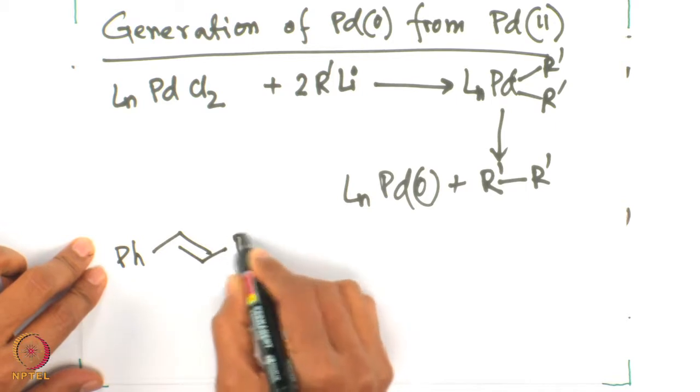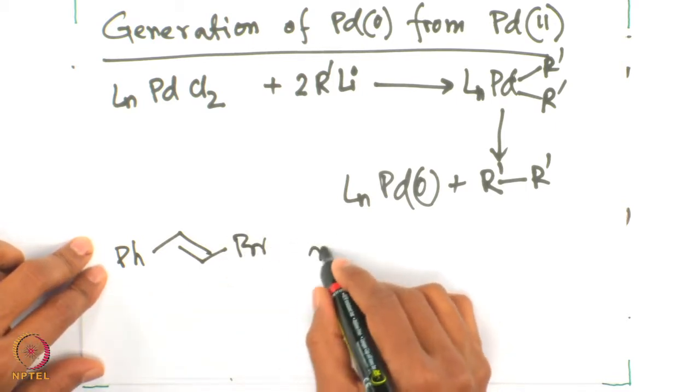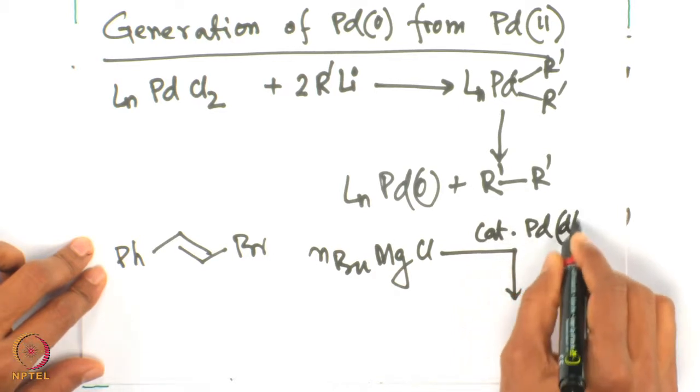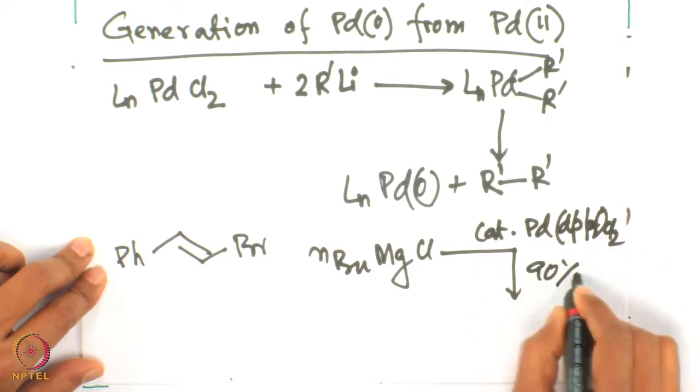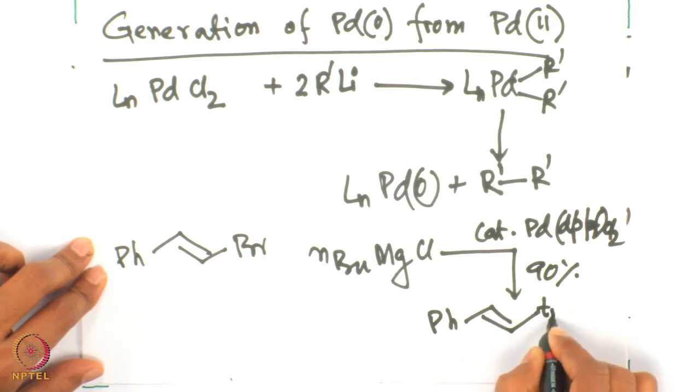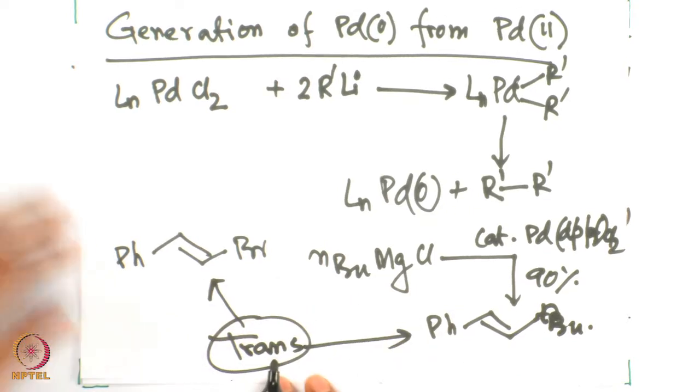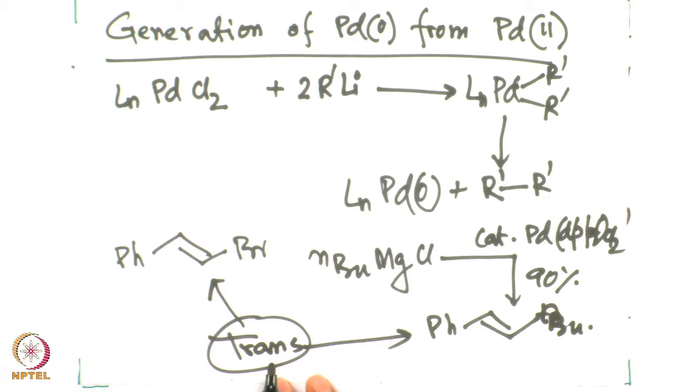One example of Kumada coupling: styrenyl bromide with n-butyl magnesium chloride, using a catalytic amount of palladium-DPPF-chloride, gives 90% yield of the product with n-butyl incorporated. This is in trans geometry — both the starting material and the product have the same geometry. That is one key factor: if you start with a trans alkenyl halide, the Kumada coupling retains the geometry, so if you start with trans you get trans.